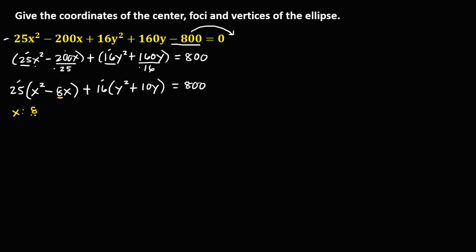Now do completing the square. For x, take the coefficient 8, divide by 2 to get 4, then square it to get 16. For y, take the coefficient 10, divide by 2 to get 5, then square it to get 25.